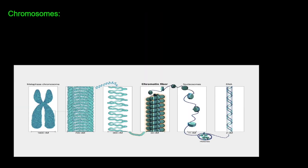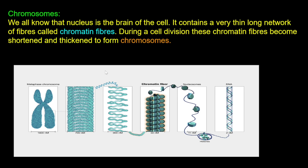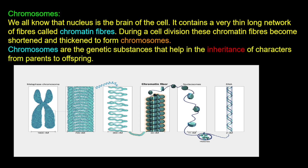The first topic is chromosomes. We all know that the nucleus is the brain of the cell. The chromosome is present in the nucleus. The nucleus contains a very thin, long network of fibres called chromatin fibres.